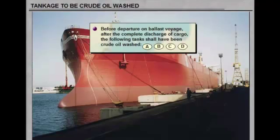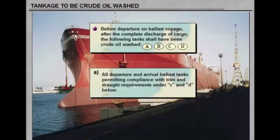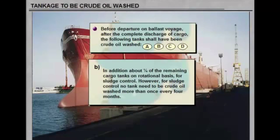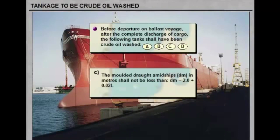Before departure on a ballast voyage after complete discharge of cargo, the following tanks shall have been crude oil washed: (a) all departure and arrival ballast tanks, permitting compliance with trim and draft requirements; and (b) in addition, about one-fourth of the remaining cargo tanks on a rotational basis for sludge control. However, for sludge control, no tank needs to be crude oil washed more than once every four months.